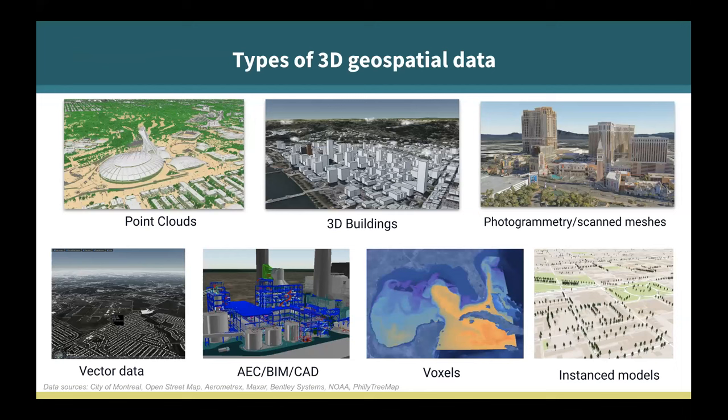To summarize the different types of 3D geospatial data: one type is point clouds, like large billion-plus point datasets. We also have 3D buildings — stylized buildings from OpenStreetMap — and scanned meshes and photogrammetry being collected at a great rate. There's vector data to represent roads and building footprints, AEC BIM CAD data, voxel data, and instance models for things like trees.